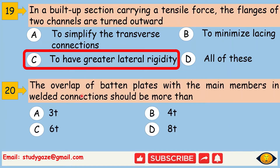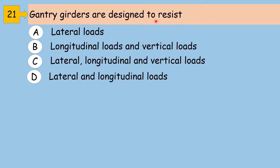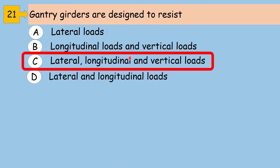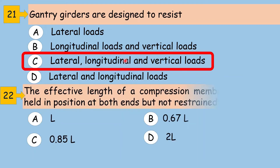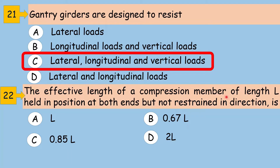The overlap of batten plates with the main members in welded connections should be more than 40. Next, gantry girders are designed to resist lateral, longitudinal and vertical loads. Next, the effective length of a compression member of length L, held in position at both ends but not restrained in direction, is L.